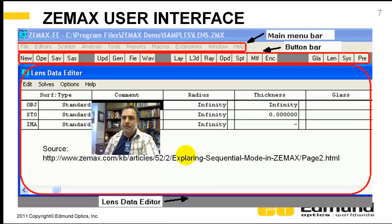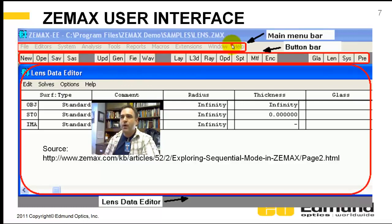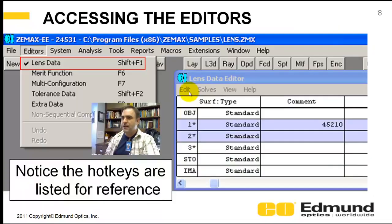So when you fire up ZEMAX — and I've hiked this from the web — ZEMAX has a really cool knowledge base for getting you started. I highly recommend you look it up. When you fire it up you're going to have the LDE, which is this red box right here. There's the main menu bar, file through help. You've got a bunch of button bars: new, save, save as, update, layout, glass selection, et cetera. That's the Lens Data Editor.